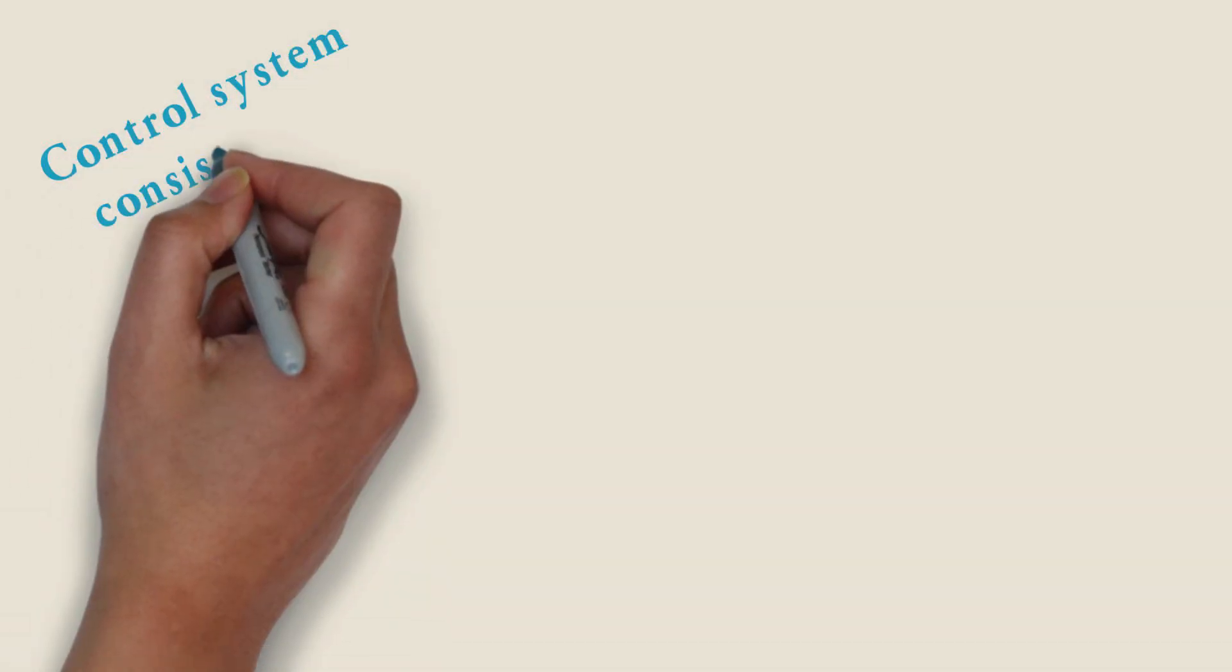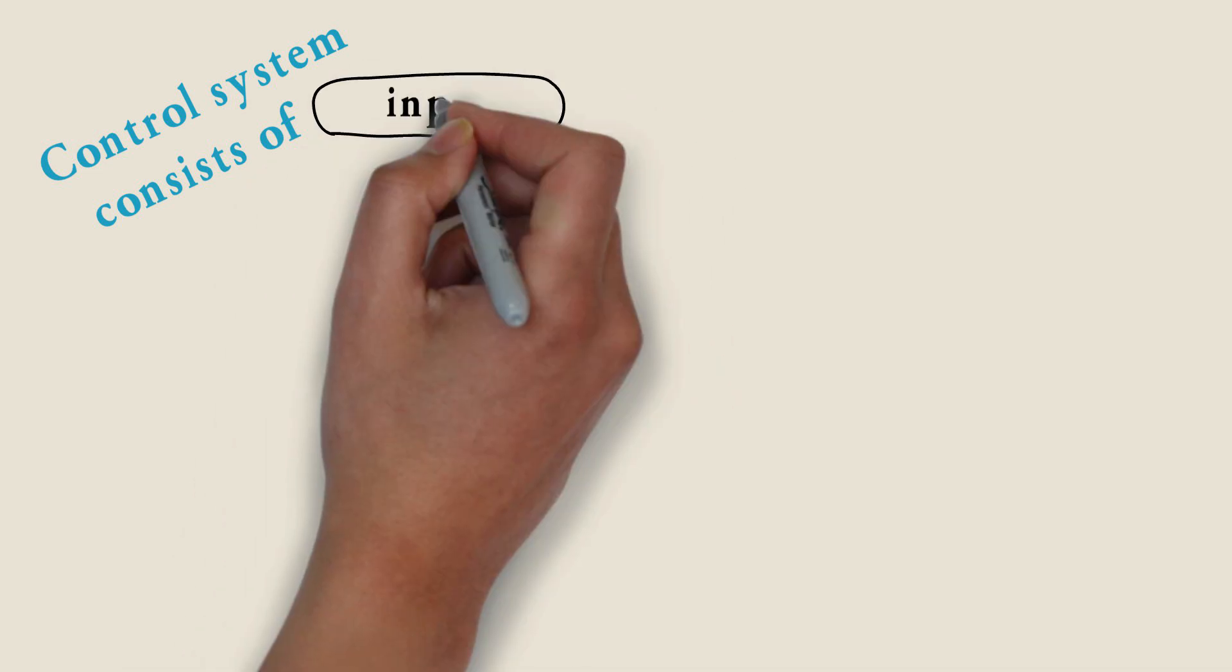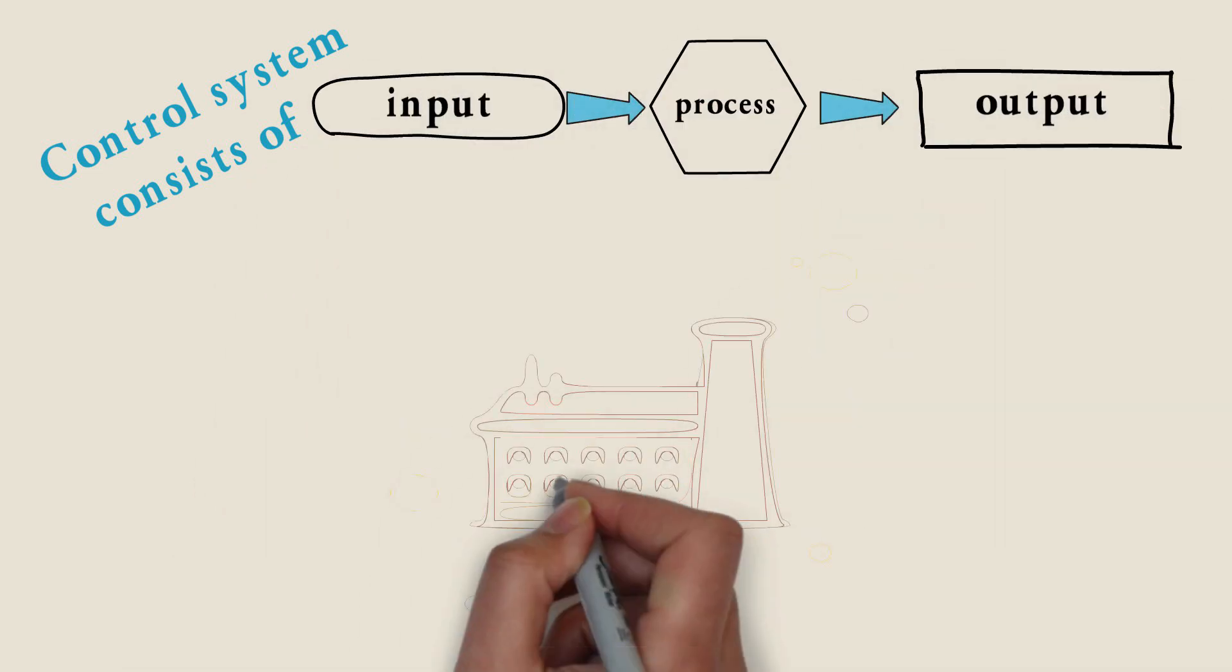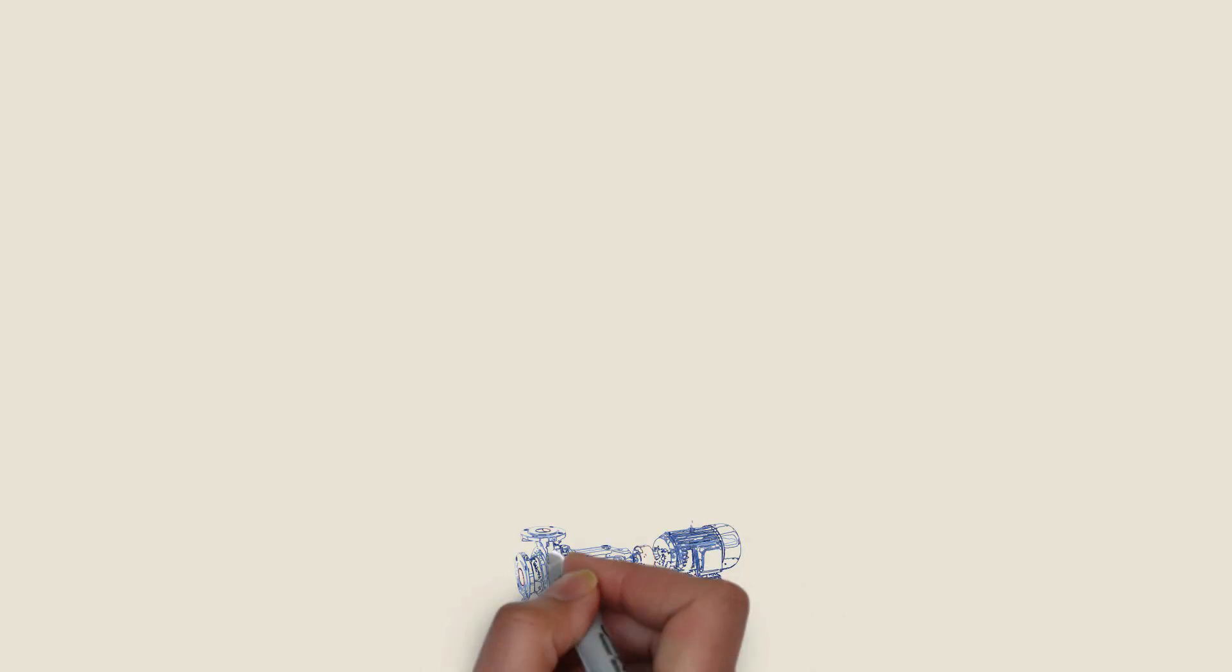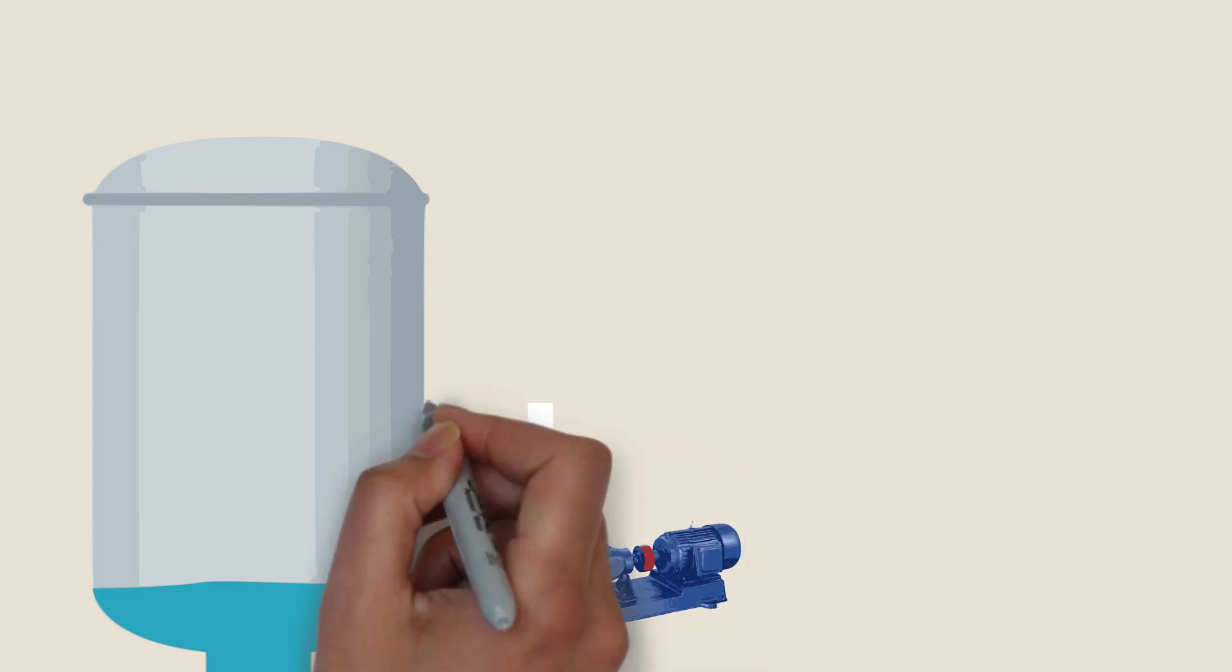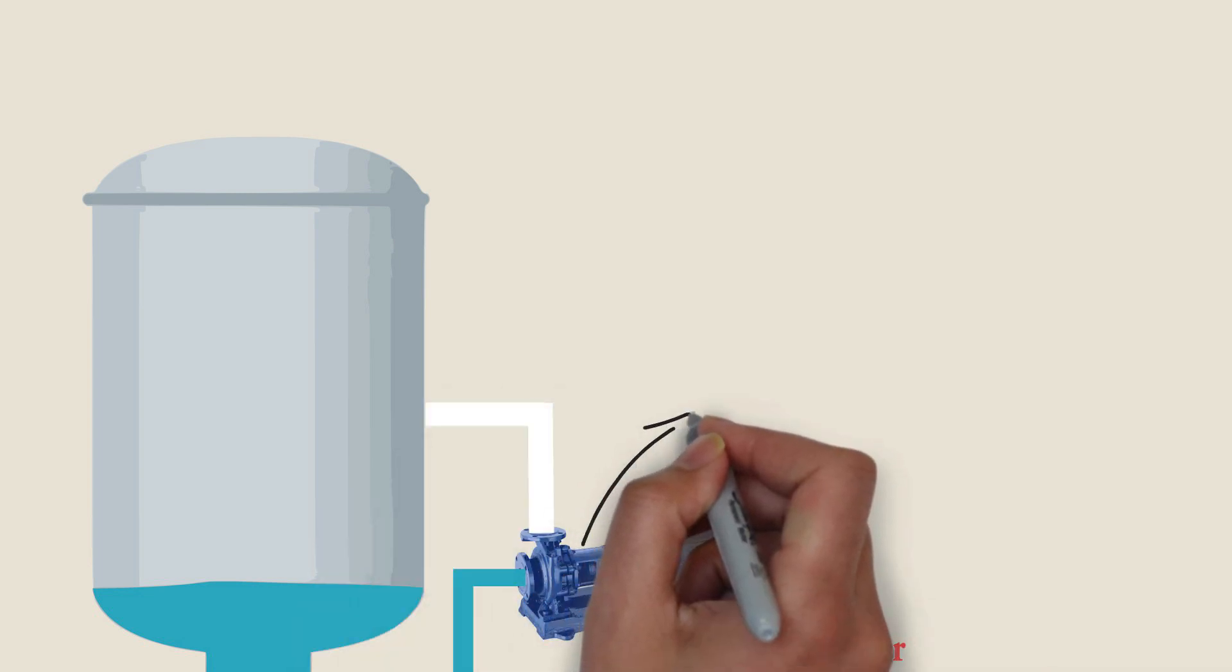We know that any control system consists of input, process, and output. Now let's bring this concept into a factory. If we have a water pump and a tank and we want to fill this tank with water, to do that we need to turn on the water pump.